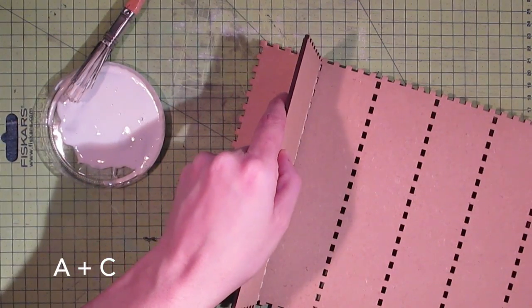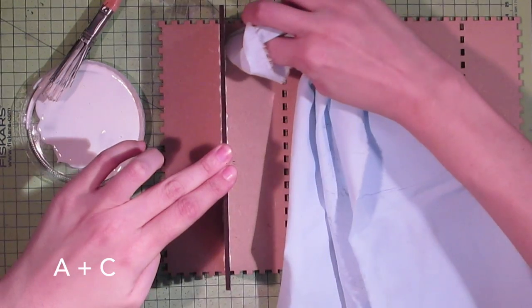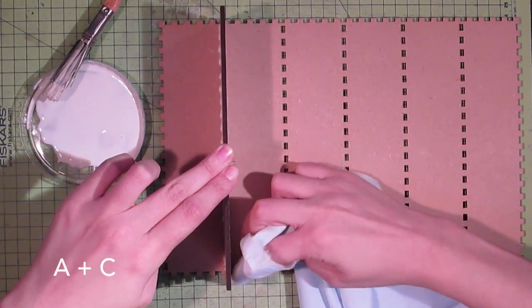Glue it on panel A and clean the excess of glue with a piece of fabric.